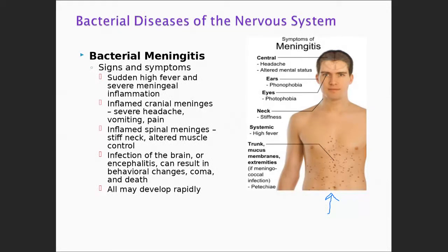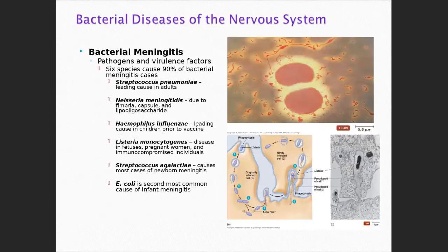Anytime anything gets into the meninges or affects the brain, it can be really serious. For the exam, I want you to know these six organisms are the most common bacteria that cause meningitis — we'll talk about viral meningitis in a bit. First, Streptococcus pneumoniae is the leading cause of meningitis in adults, especially the elderly.